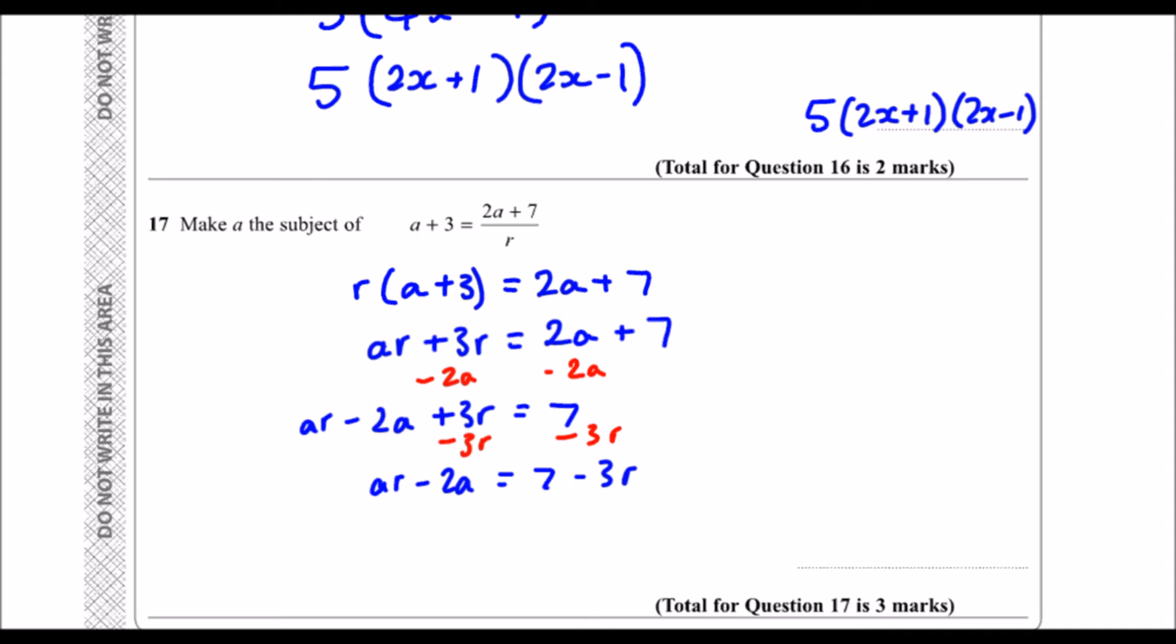How can I get a by itself? Because I've got an a with an r and an a with a minus 2, I need to factorize it. So I take a outside the bracket, which leaves me with a(r-2) equals 7 minus 3r.